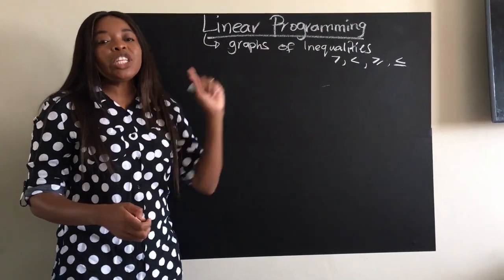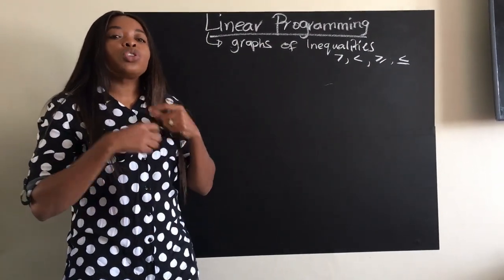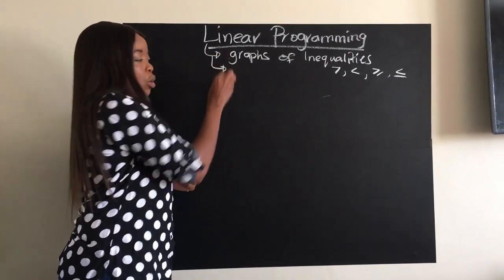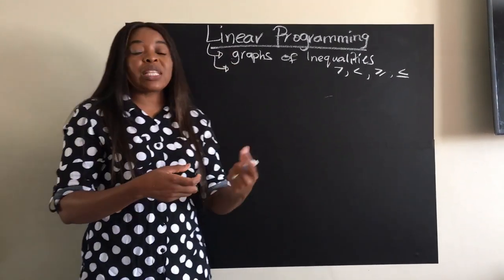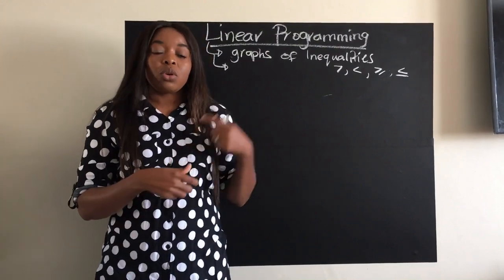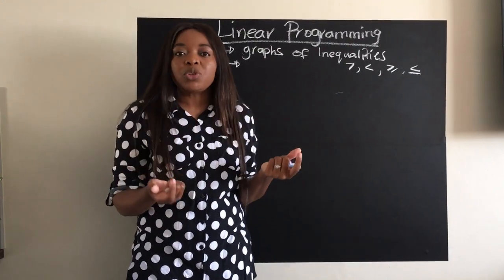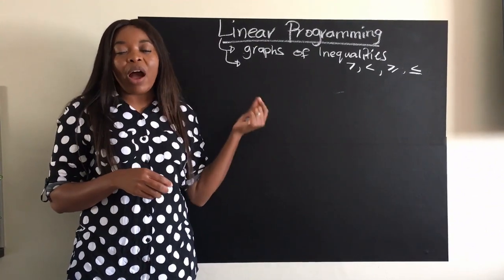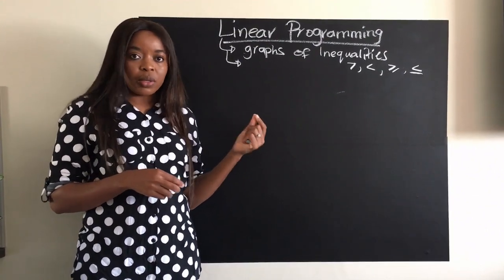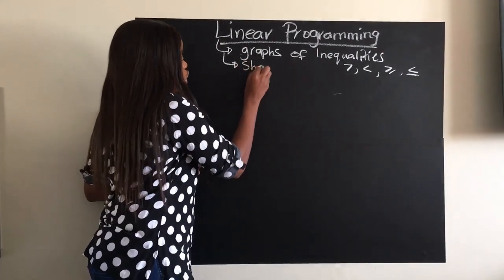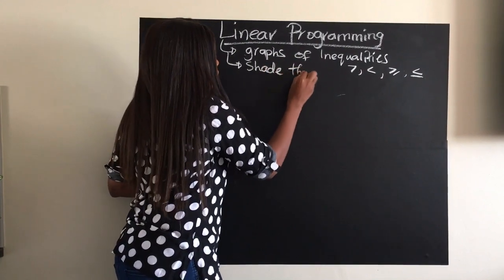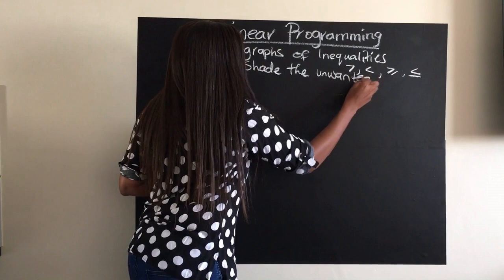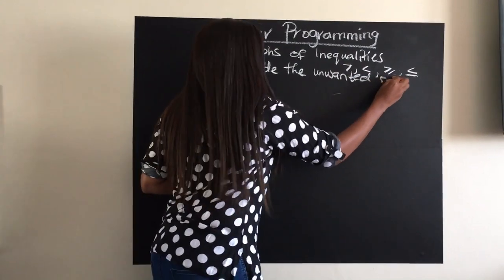In addition to graphing inequalities, we are also going to do some shading. In linear programming — because there are other topics like locus where we also do some shading — but in linear programming, we always shade the unwanted region.